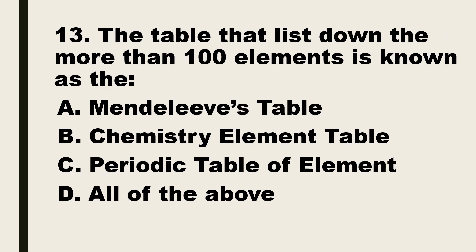Number 13. The table that lists down more than 100 elements is known as the: A. Mendeleev's table, B. Chemistry element table, C. Periodic table of elements, D. All of the above.